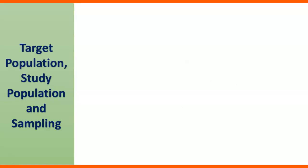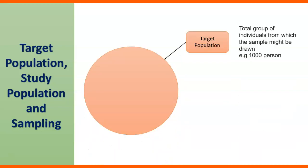This slide shows about target population, study population and sampling. Number one is target population. Target population is total group of individuals from which the sample might be drawn. For example, target population represents 100%.